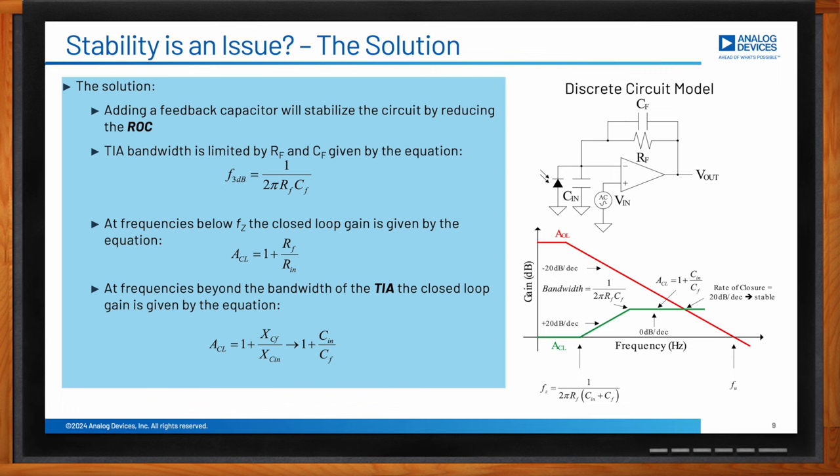The next inflection point is when the impedance of the feedback capacitor equals the feedback resistor — a pole forms and gain flattens. Beyond that, the feedback capacitor has lower impedance than the feedback resistor, which can be treated as an open circuit. The closed-loop gain at frequencies beyond the RF·CF pole is determined by the ratio of input capacitance to feedback capacitance. Since both impedances decrease with frequency, the ratio stays constant and the Bode plot has a 0 dB/decade slope. Limiting bandwidth this way improves stability and reduces noise.